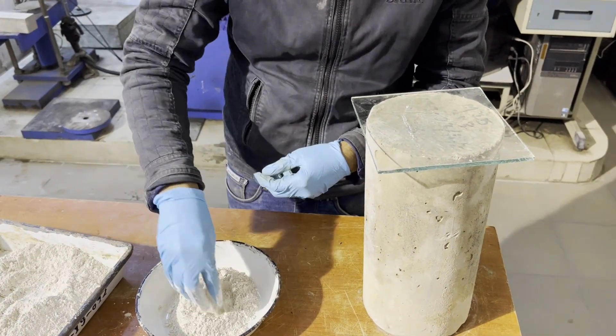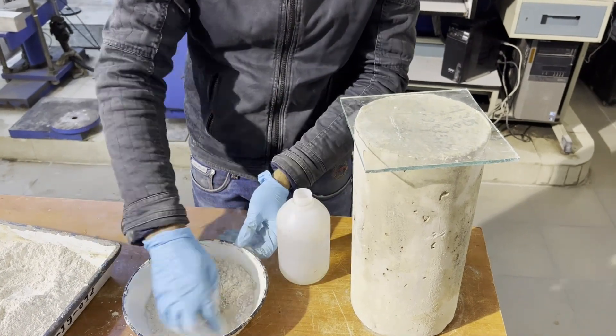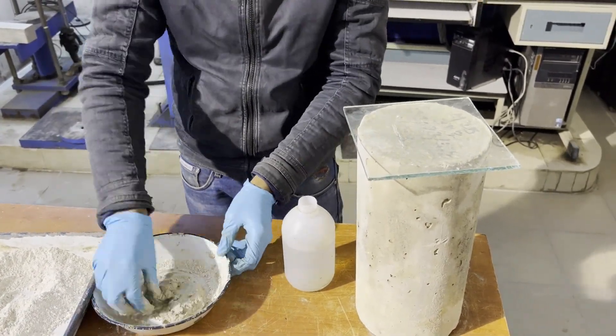Capping of cylinder is done to provide proper level surface so that loading can be uniform on it. Prepare a stiff plaster by mixing gypsum and water in it and while preparing the paste mix it well enough as this will help gypsum to gain strength.